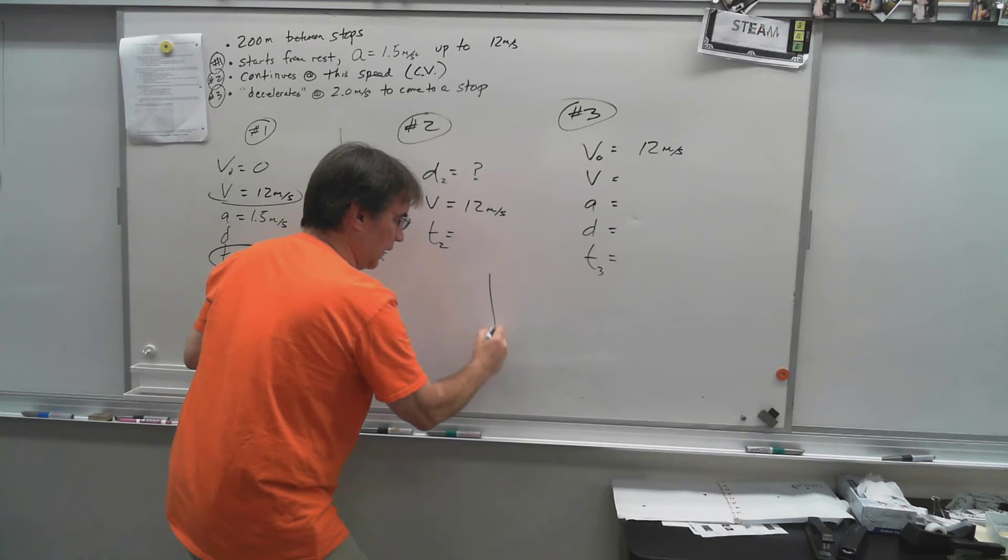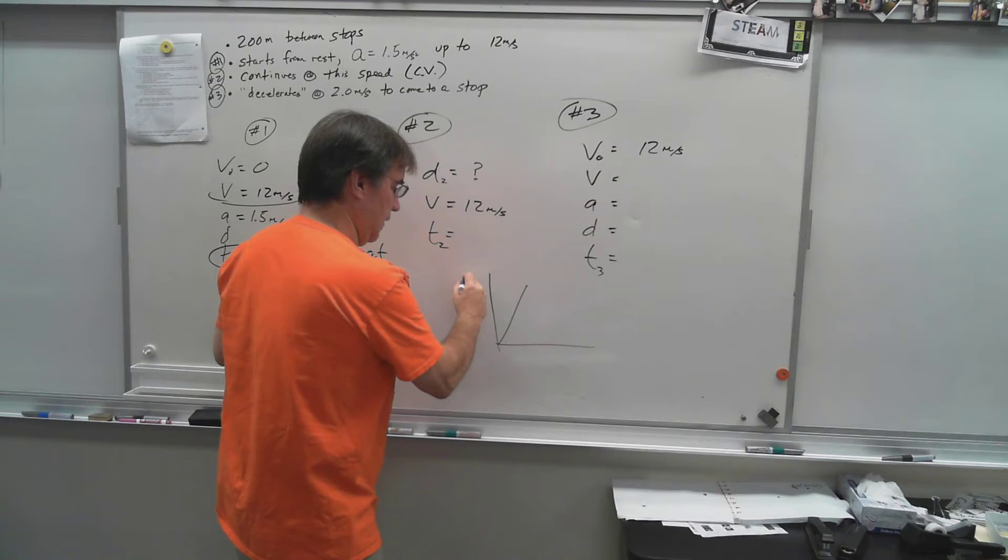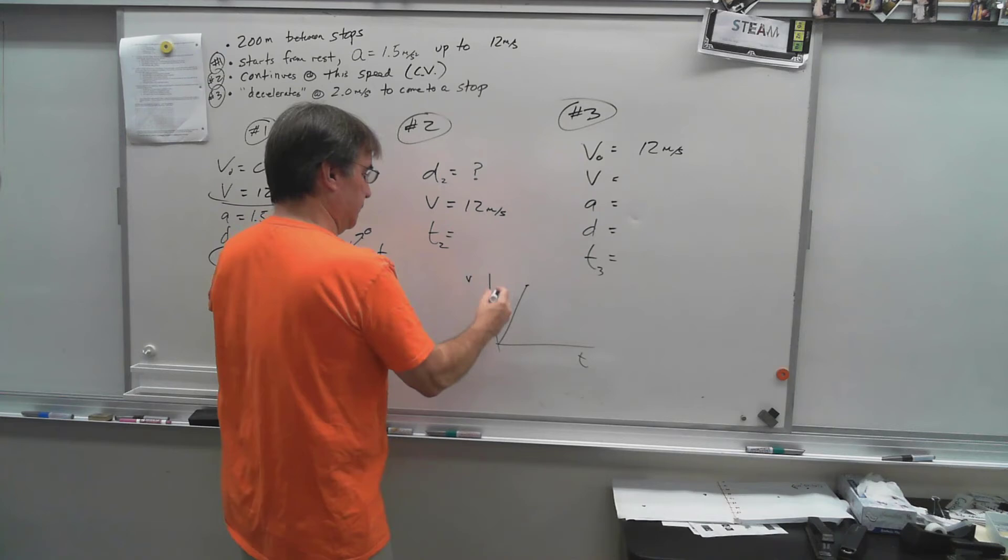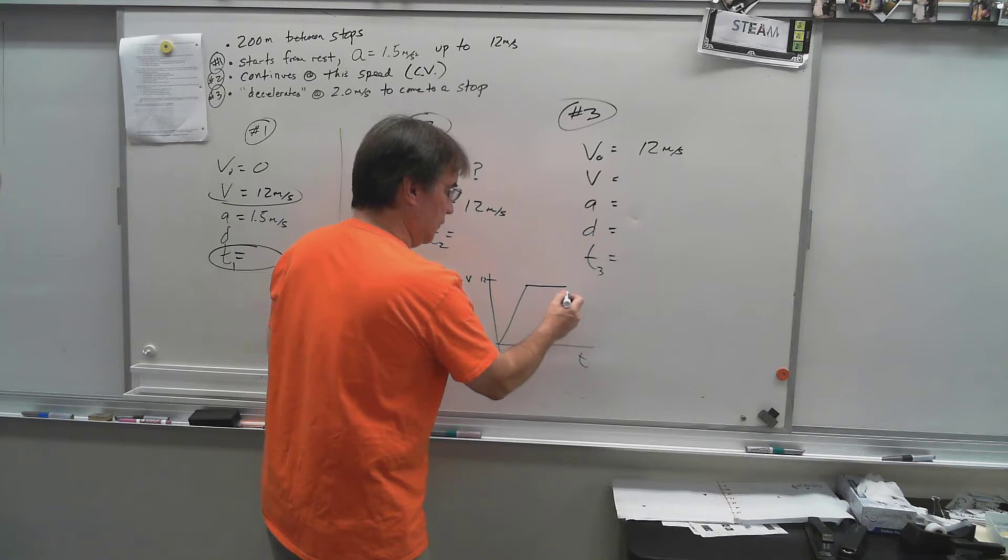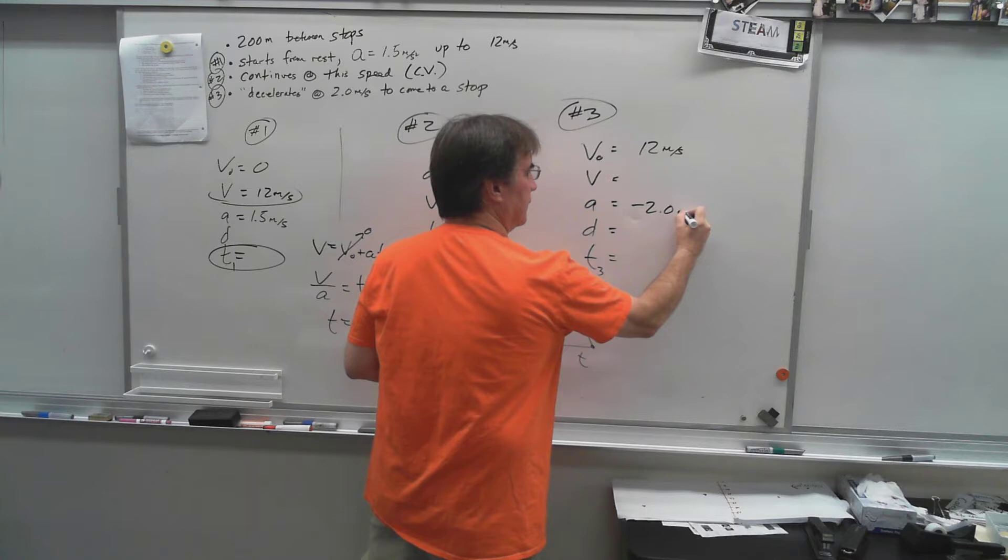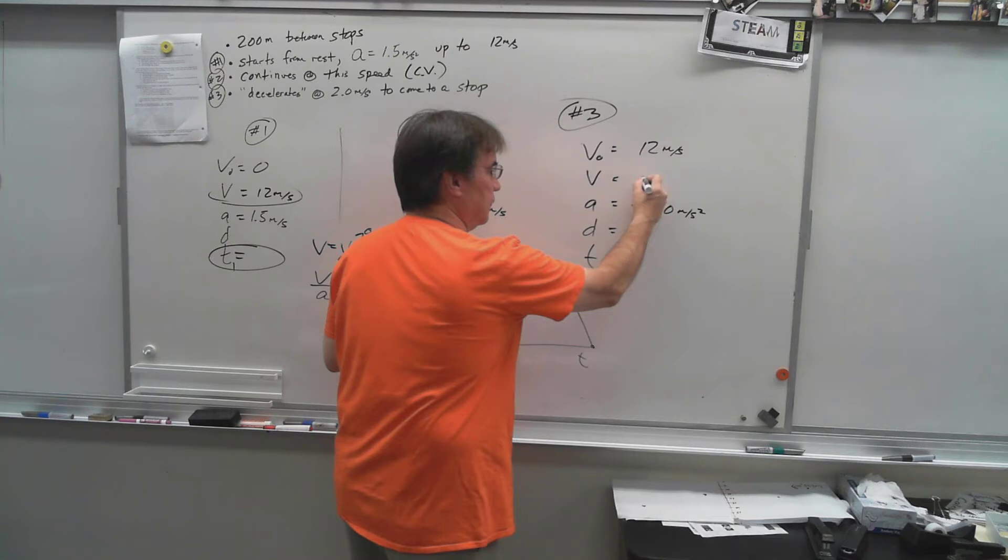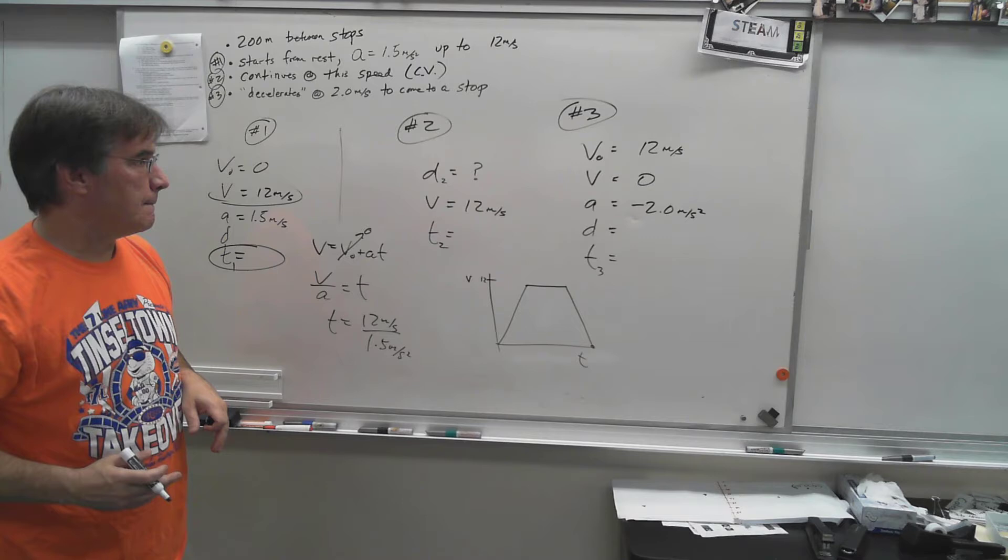We went from zero up to 12, we continued at that speed. In fact, just a kind of quick look at the graph here. So we accelerated, this is velocity-time, up to 12 meters per second, and then we continued at that speed for some time we don't know, and now we're slowing back down to come to a stop. Realize that's going to be a negative 2 meters per second squared because if I have a positive velocity and I'm going to come to a stop, I need a negative acceleration there.